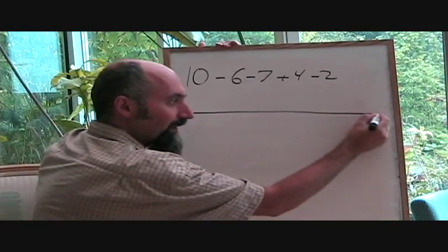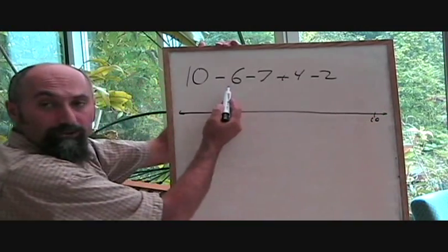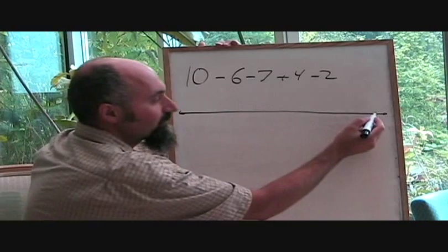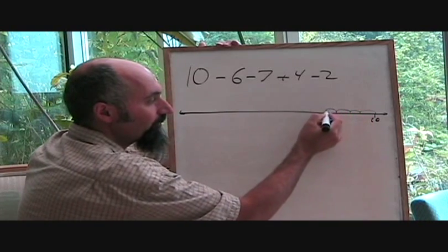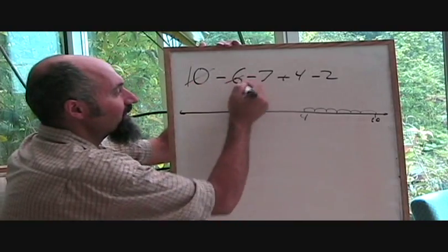So if you do your number line here, start off at 10. What you're going to do is go back 6. So 1, 2, 3, 4, 5, 6. So you're at 4 here. So 10 minus 6 is going to be 4.